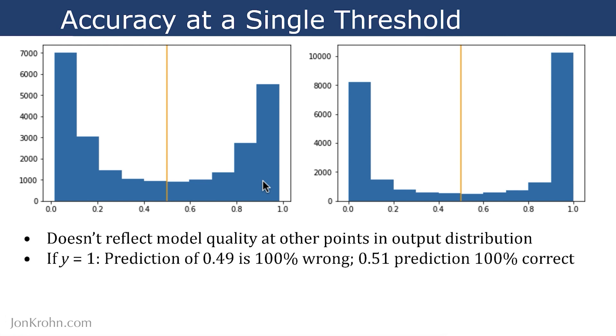Another weird thing about this single threshold is that if the true outcome is one, so if we know that some image really is a hot dog, according to this single threshold, a prediction of 0.49, just slightly below orange, is 100% wrong. Meanwhile, a prediction of 0.51, just above the orange threshold, is considered 100% correct. But in practice, our model doesn't actually have much more confidence in either of these scenarios. So this seems like a wild swing.